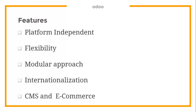Odoo also has internationalization. Right now it supports more than 50 to 60 countries with more than 50 languages. It has a lot of local modules for all of those countries.